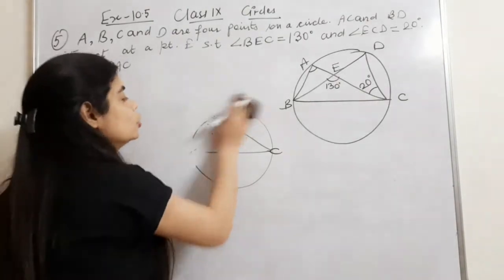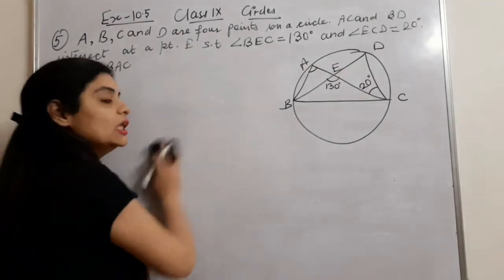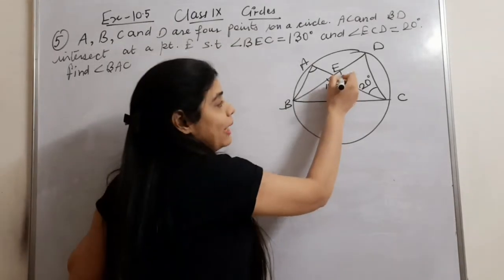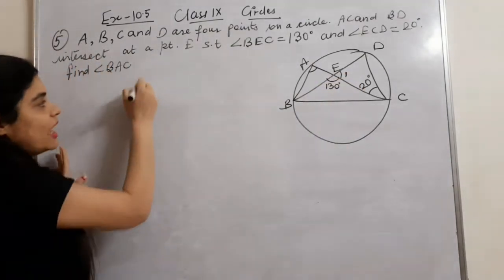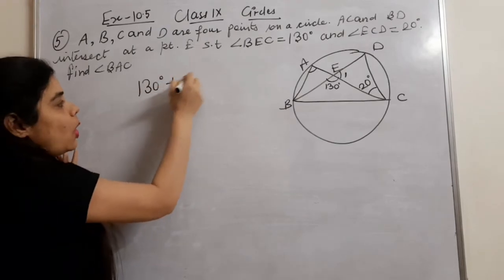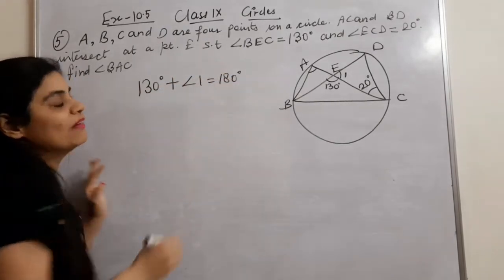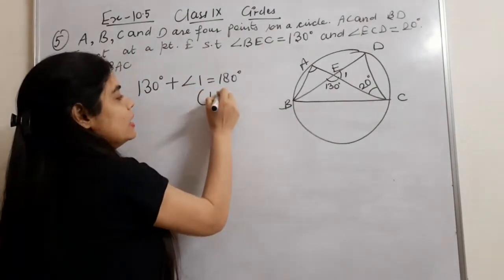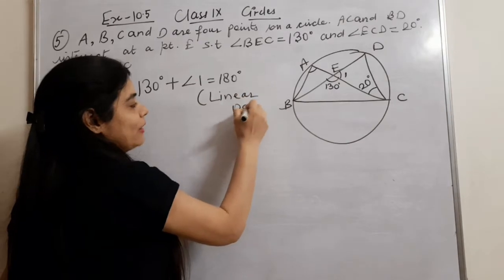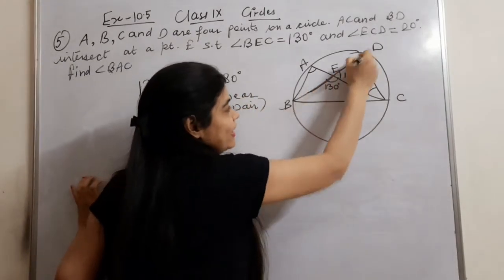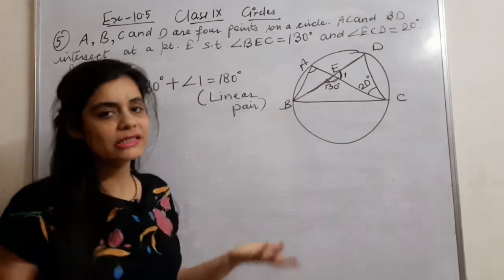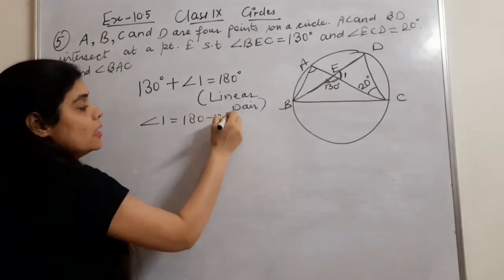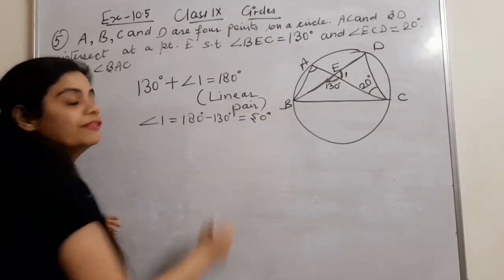This is not given. Now I have to look at angle 1. I have to show you that 130 degrees and angle 1, if I add them, will be 180 degrees. Why? Because it is a straight line — it is a linear pair. So 130 plus angle 1 equals 180 degrees.